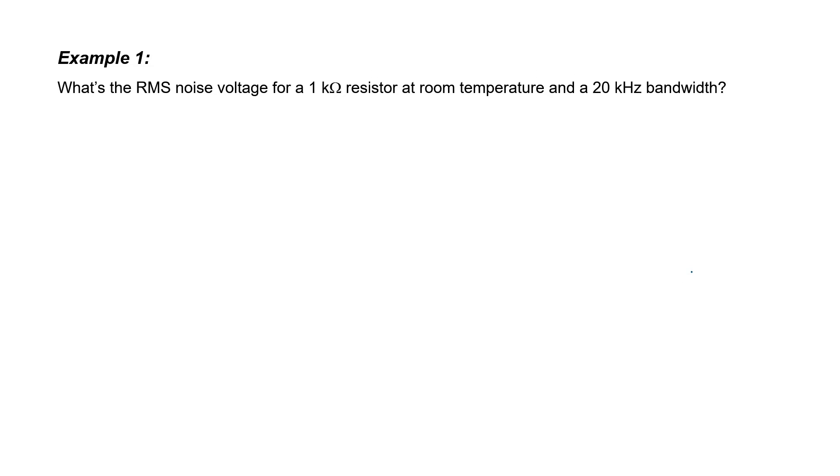Let's now look at a more proper example. Let's find the RMS voltage for a 1 kilohm resistor at room temperature over a 20 kilohertz bandwidth. First, let's copy down our equation from the previous slide. Then we can plug in Boltzmann's constant, our temperature, our resistance, and our bandwidth. And we come up with an answer of 575.5 nanovolts. That's not a very high voltage, but it gives you some idea of the kind of noise level that you can expect from such a resistor at room temperature.